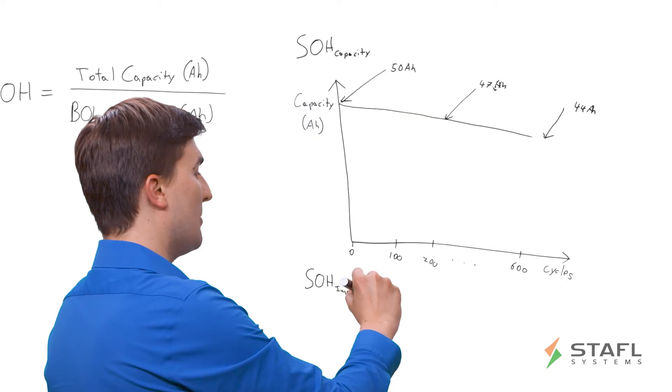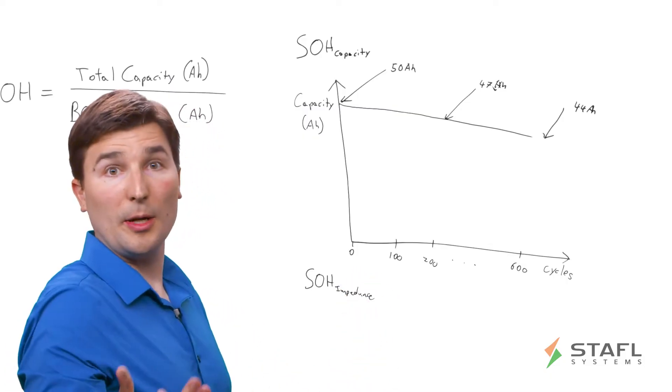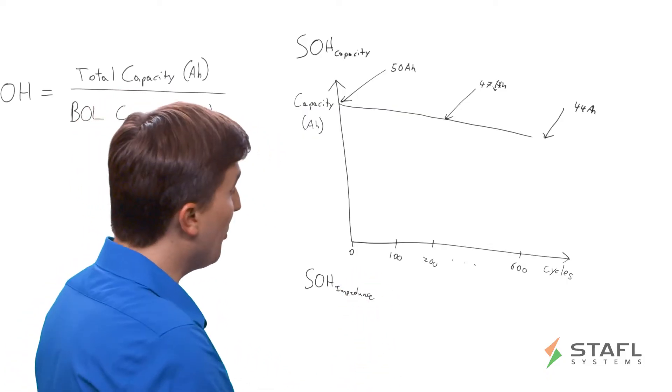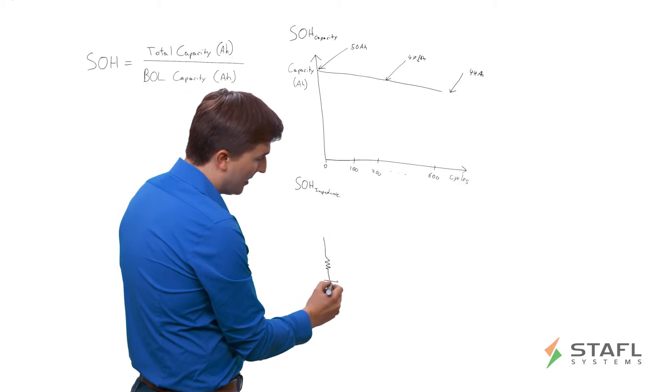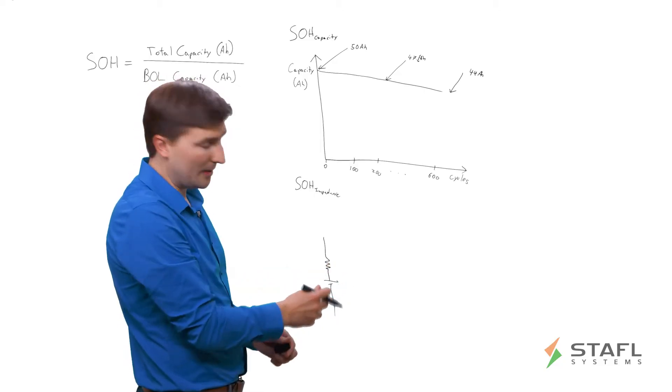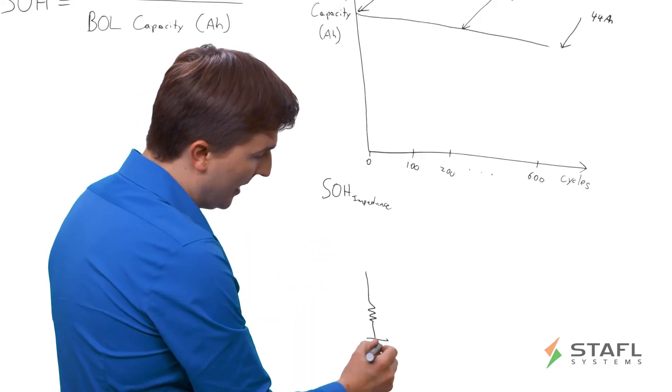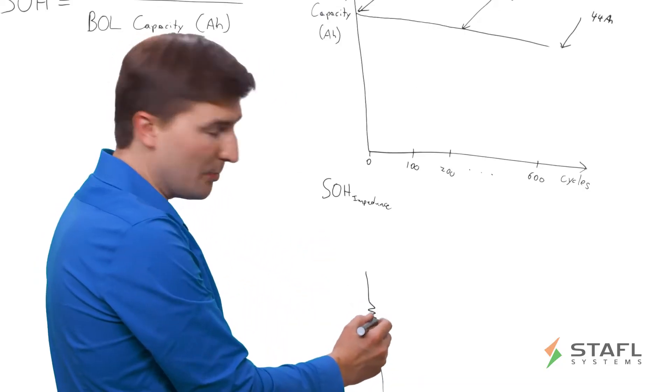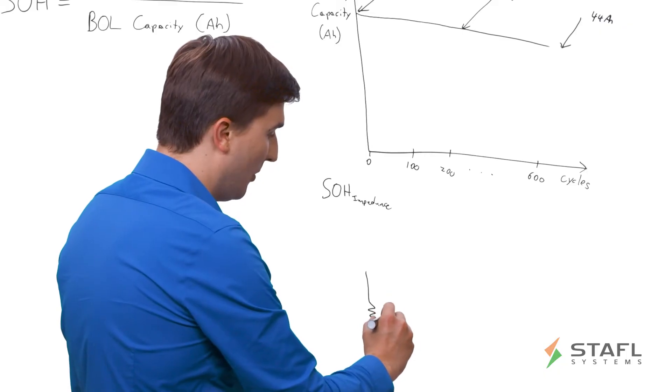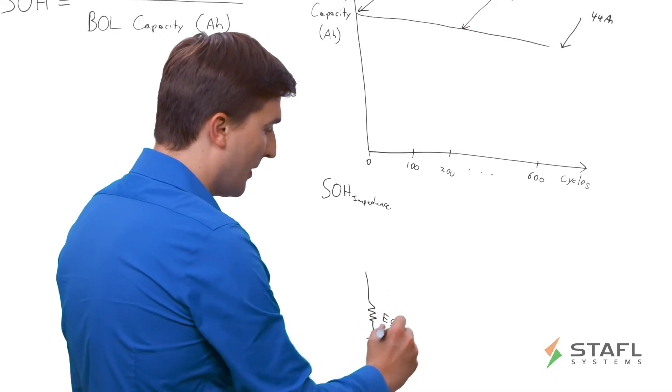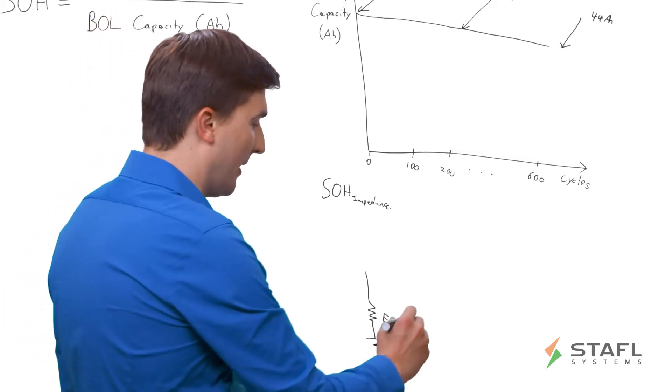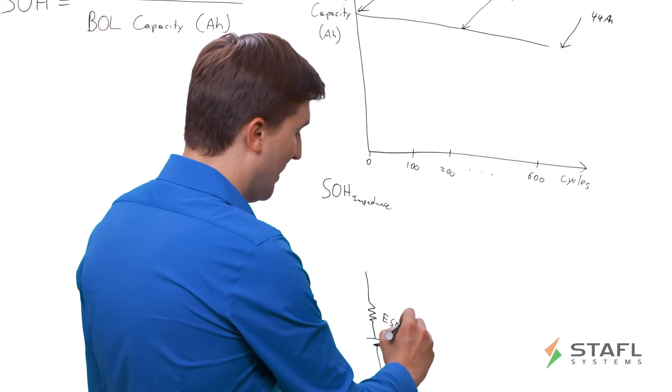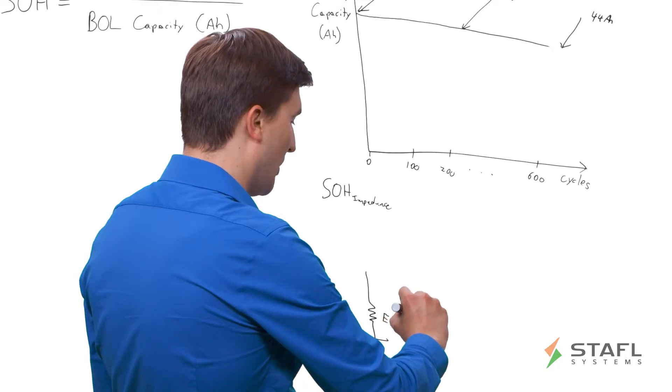So what does impedance mean? Impedance is just a fancy way of saying resistance. So any sort of lithium ion battery cell, or any cell in general, can be modeled as a two-device model. Basically, here's your ideal lithium ion cell. And then here's what's called ESR, the Equivalent Series Resistance. And so typically for a cell, this might be, say, 20 milliohms at the beginning of life, at a certain temperature. So for example, I'll say that this is 20 milliohms.